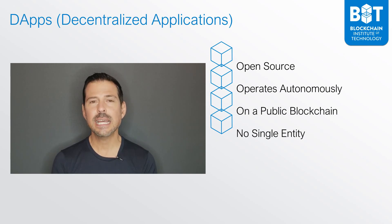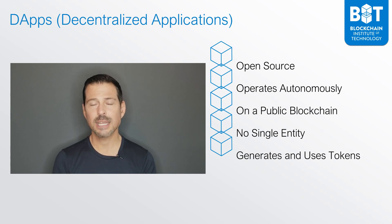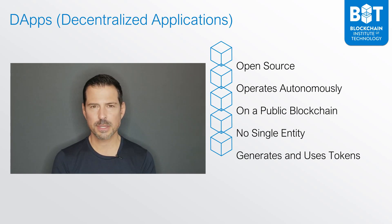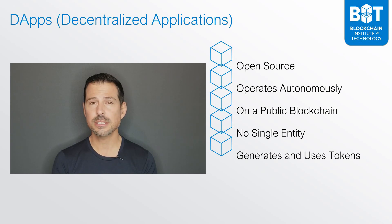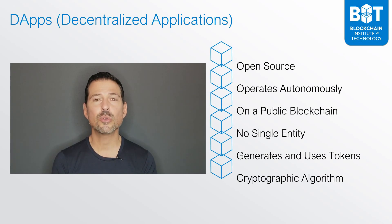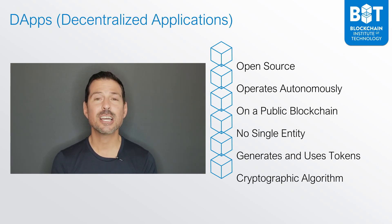dApps must operate and generate using tokens. In the case of Bitcoin, for anybody to be able to use it, they need to have Bitcoins — it's what you send and receive. Also, new Bitcoins are generated by the miners. This is how they are compensated for processing and confirming the transactions. Finally, those tokens need to be generated using a standard cryptographic algorithm, such as proof of work, which is used in Bitcoin. And that is how you define what a dApp — a decentralized application — is.